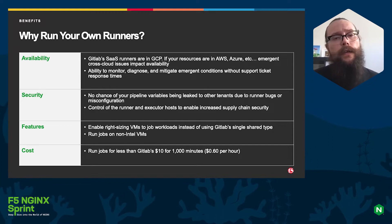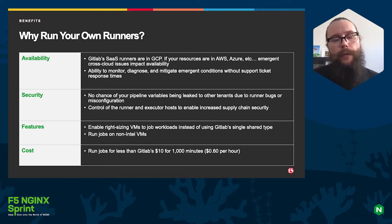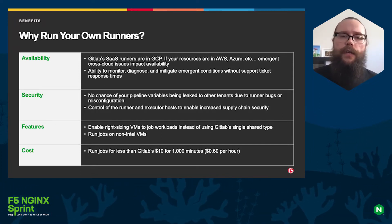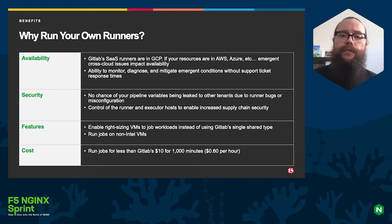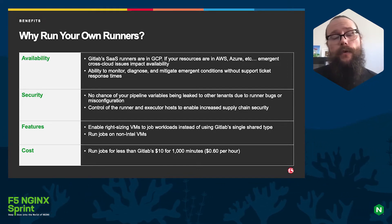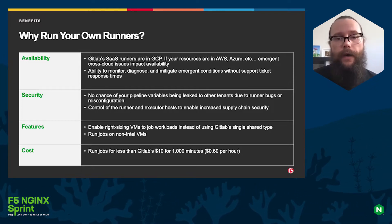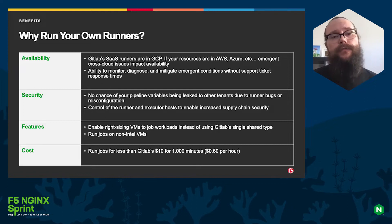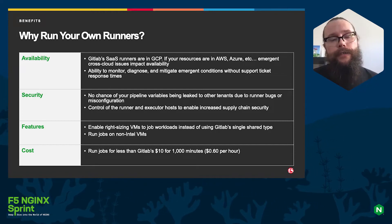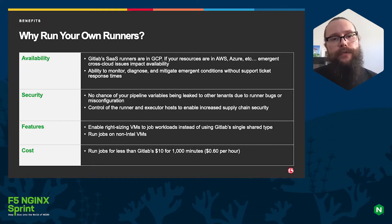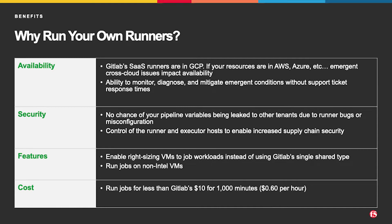If you're using the GitLab SaaS, they are hosted in Google's cloud. Now your resources are probably in Azure or AWS. This creates an issue of cross-cloud availability, which impacts runner stability and your build times. In addition, if you're using your own runners, you can diagnose and mitigate issues without having to create support tickets or waiting for someone else to solve the problem.